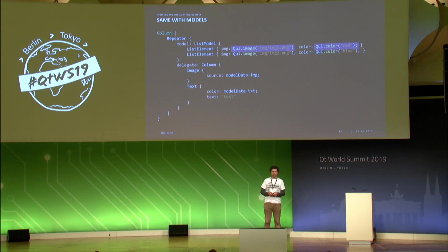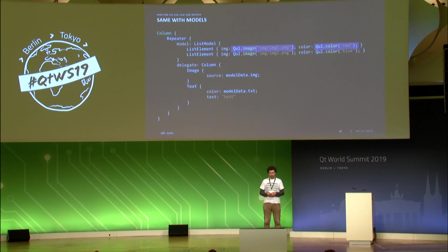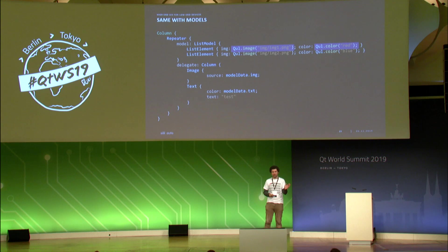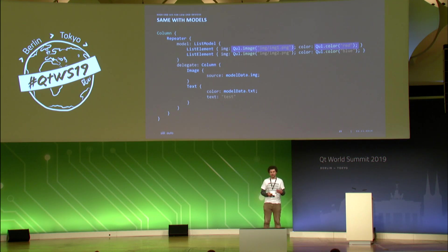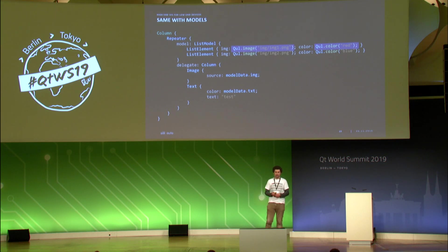One important difference with list models compared to mainline Qt: in Qt for MCU, list models are immutable. You cannot change them at runtime, because C++ code is generated from them at compile time. Think of list models as helpers for mocking up data for your views during design. For production, use the C++ APIs to provide actual data to your views.